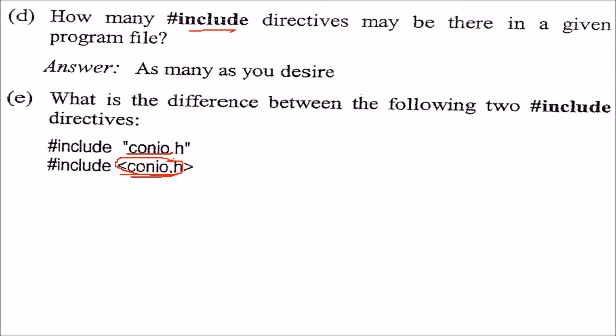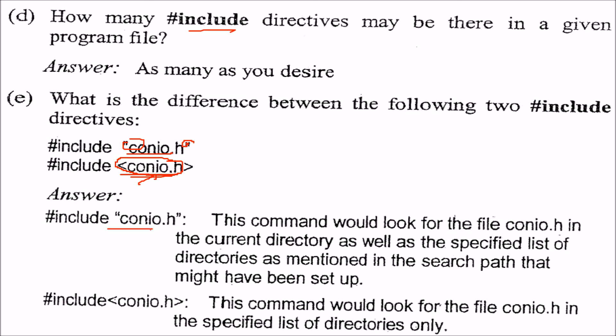When you use this angle bracket, conio.h will only be searched in that directory which you have specified. But if you use double quotes, it will search in that specified directory, but along with this, the directory in which you are - your present working directory - it will search there also.